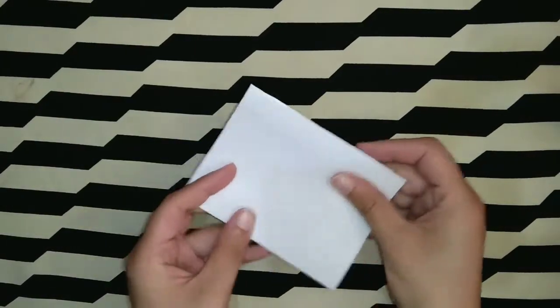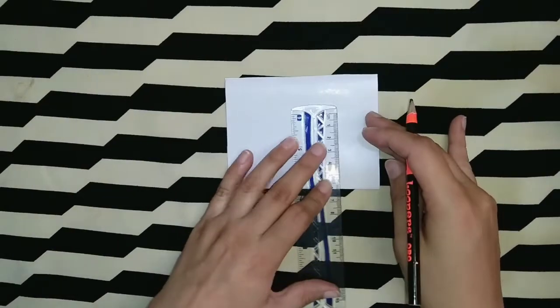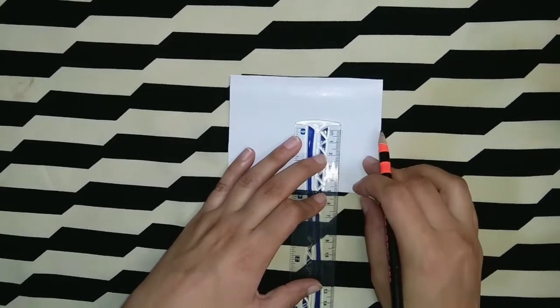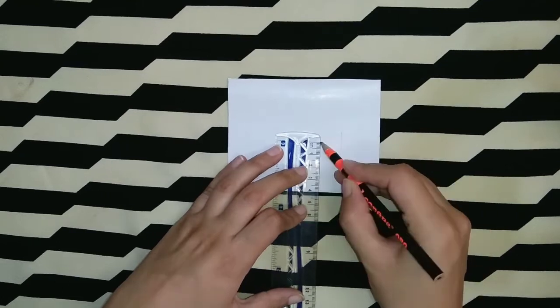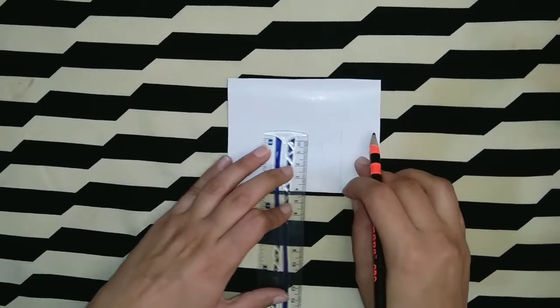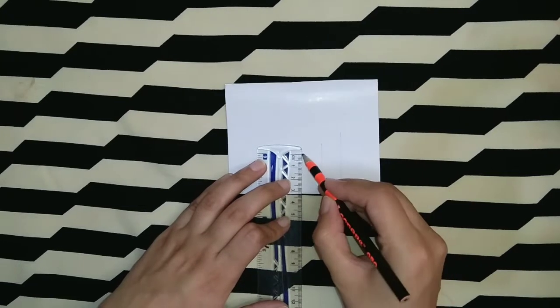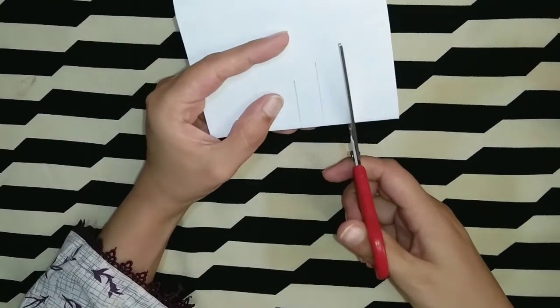Assalamu alaikum, hope you are all well. Welcome back to my channel. Today we have a special DIY project in store for you: creating a beautiful birthday card. First, take a mounting sheet of any size you want. Then I am drawing the lines. The first line is five centimeters, the second is four, and the third one is three centimeters.